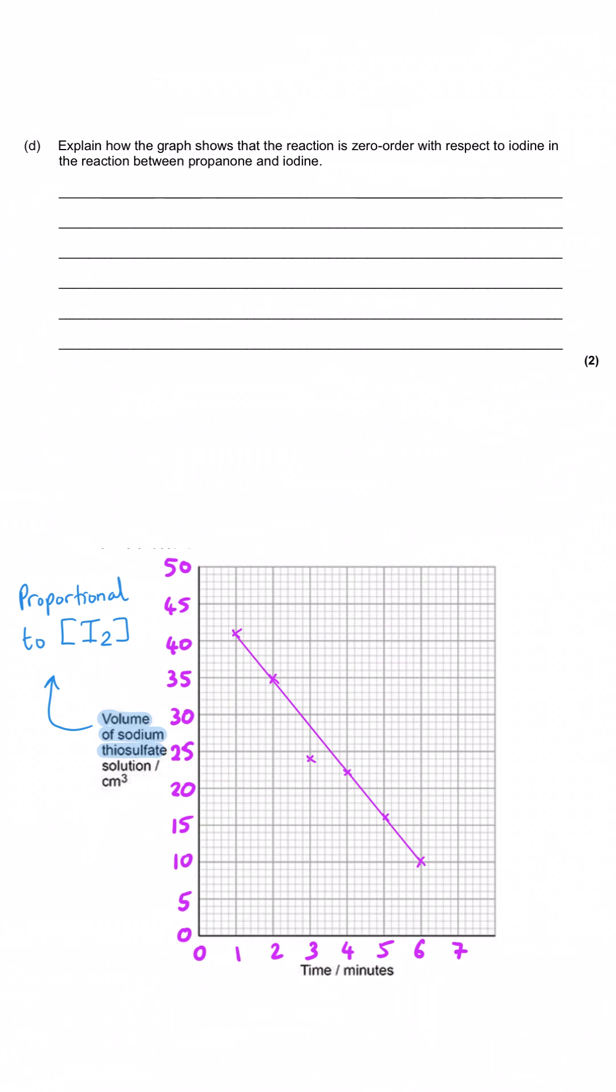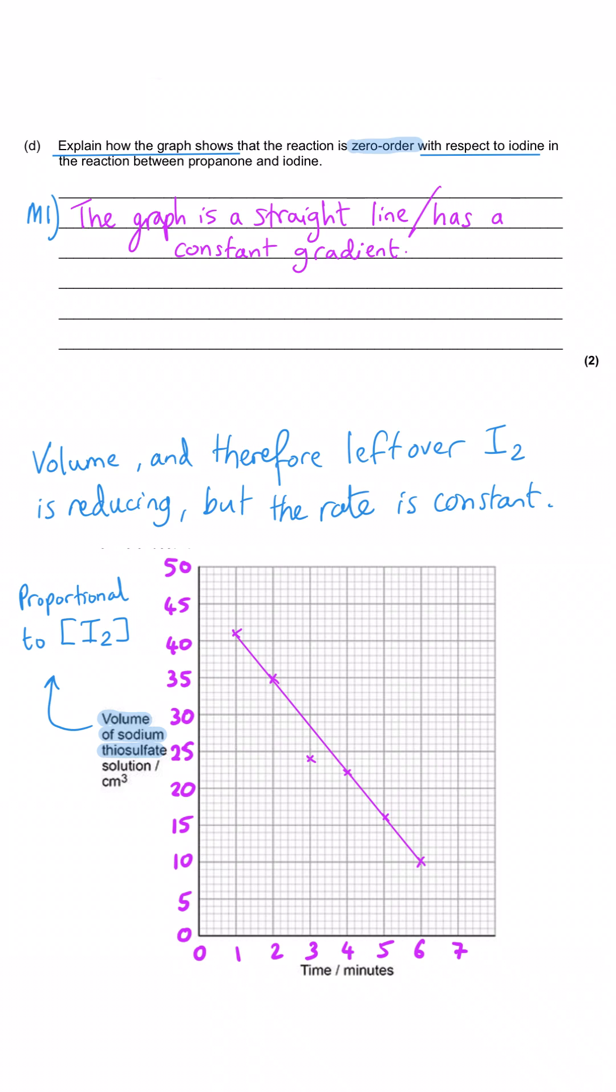The question asks us to explain how the graph shows that the reaction is zero order with respect to iodine. From the graph, the most notable feature is it's a straight line with a constant gradient. That should be the first thing you say because it isn't always the case. The significance of this constant gradient is that the volume is changing at a constant rate, meaning the iodine is being used up at a constant rate.